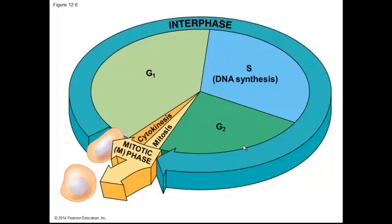If we put the cell cycle on a clock, here's what it would look like. G1 is the first phase and lasts a considerable amount of time, then comes the S phase, then the G2 phase — and all of this makes up interphase. Then we get to the mitotic phase, which includes mitosis and cytokinesis.